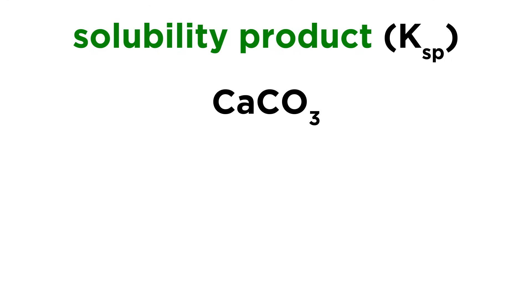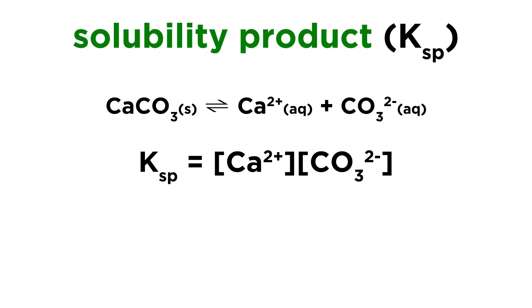Take something like calcium carbonate. First we must write out the complete equilibrium. Upon dissociating, this will form a calcium ion and a carbonate ion, therefore the solubility product will be equal to the product of these two ion concentrations.